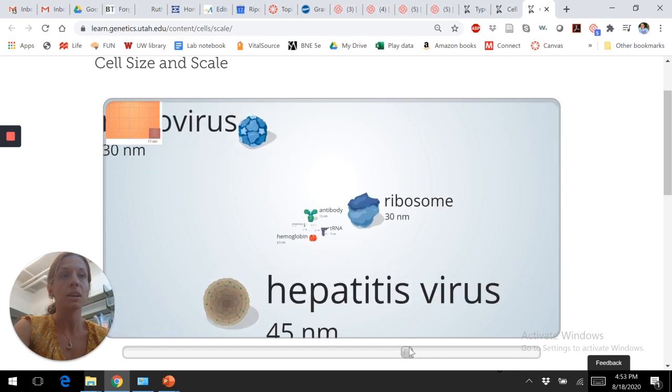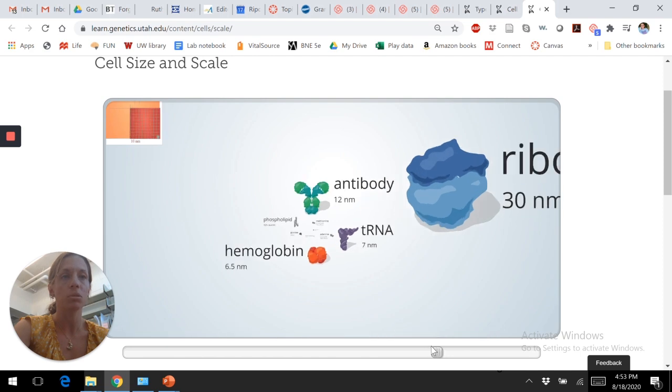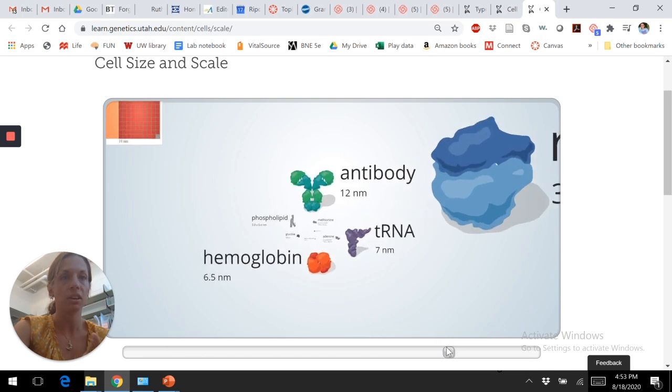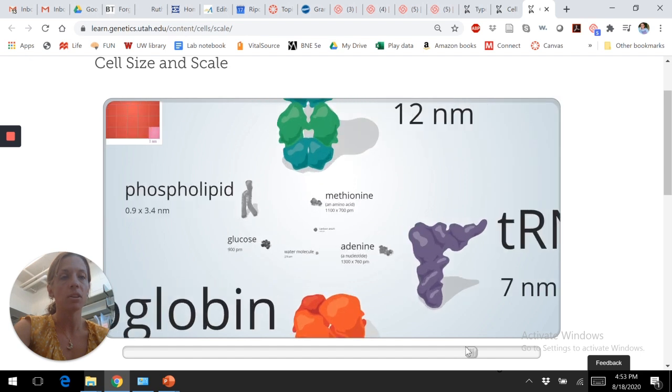We've got ribosomes. Hemoglobin now is a protein, right? Antibody is a protein. So, we're at the protein level now. And then we've got some other biomolecules, phospholipids,